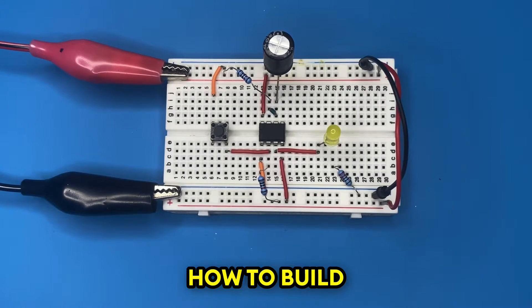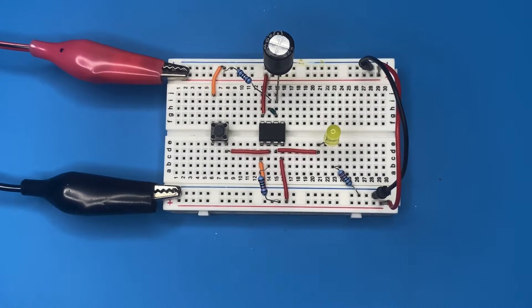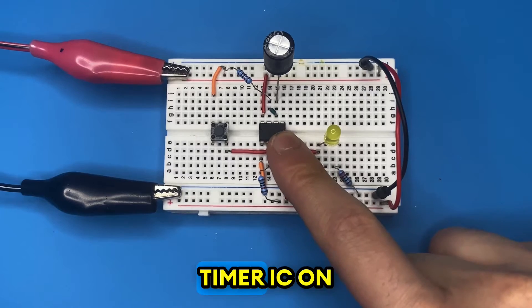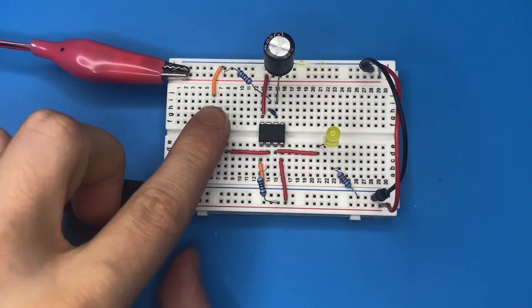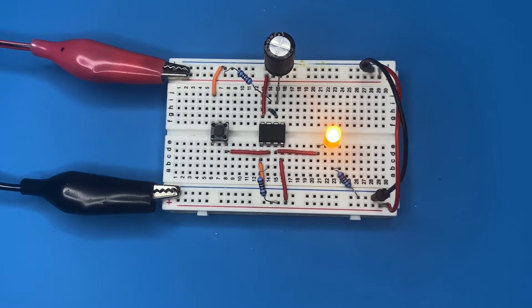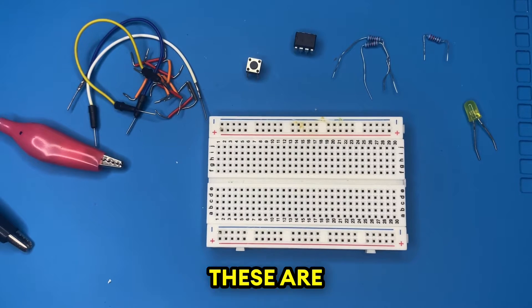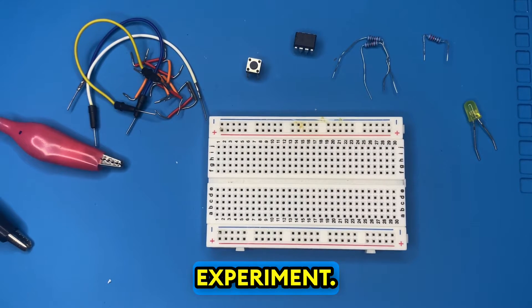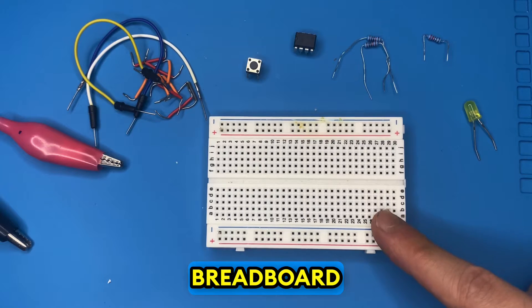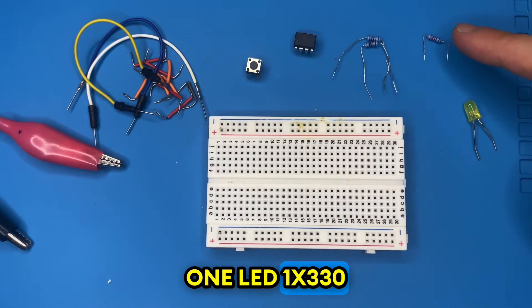In this video you will learn how to build a simple monostable circuit using a 555 timer IC on breadboard. These are the components which you need for this experiment. I'm going to use a breadboard, one LED, one 330 ohm resistor.